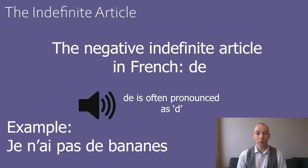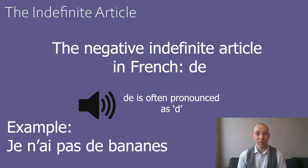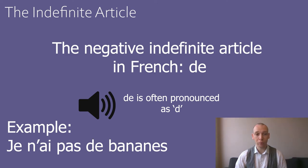A quick pronunciation note at this point, and that is 'de' is often shortened to a simple D sound that can be very difficult to catch for French learners. So to use that example from before, it would often sound like 'Je n'ai pas de bananes'.